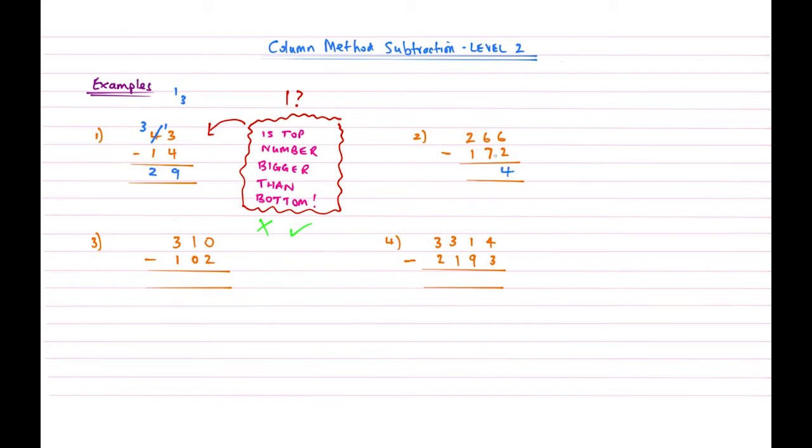Move on to my 10s column. Now again, do the check. It's smaller than the bottom, so we need to compensate or borrow again. So strike it through and reduce this one by 1. So then that becomes 1 because 2 take away 1 is 1. And then the 1 that we've taken away goes next to the 6.